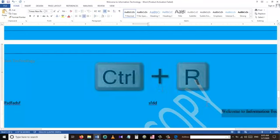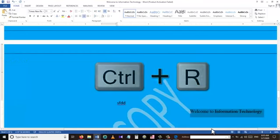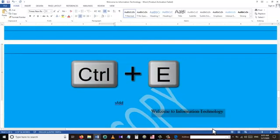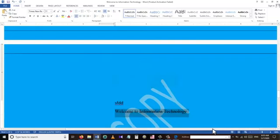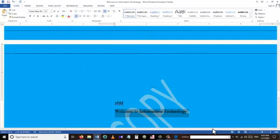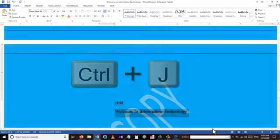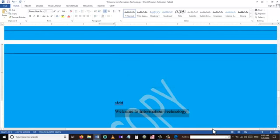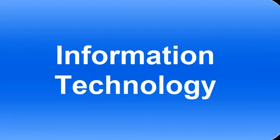The Ctrl+R shortcut is used for right alignment, Ctrl+E for center alignment, Ctrl+L for left alignment, and Ctrl+J to justify the alignment. Thank you for watching this tutorial — please subscribe to my channel and I will try to upload more related videos. If you have any questions or comments please leave them under this video and I will try to answer all of them. Thank you so much and have a good day.